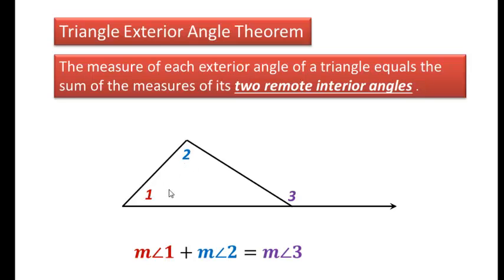So in this case here, angle one and angle two are remote interior, and the word interior means inside, so that makes sense. And remote just means away from the exterior angle. They're the two angles that don't form a linear pair with the exterior angle. So if we add these two together, they would equal this exterior angle here.